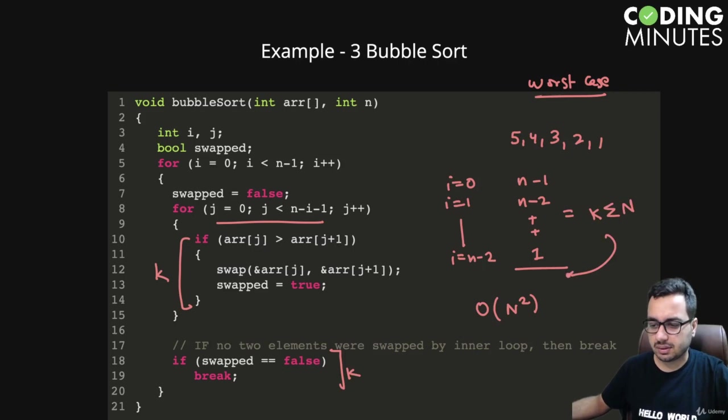We have already seen that this sums up to summation of n, multiplied by some constant work. This turns out to be this complexity because this equals n times n plus one by two.